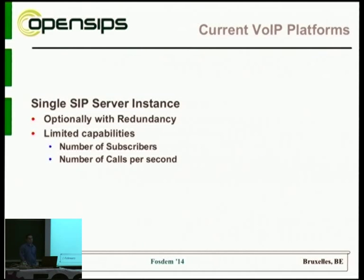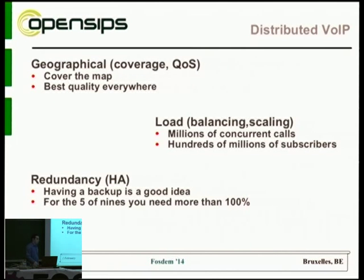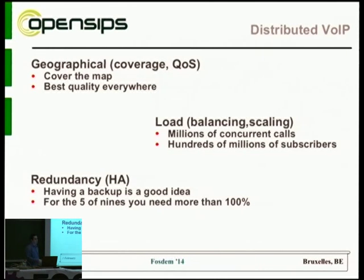Even if you're running high performance software like OpenSIPS, there are still some reasons why you wouldn't want to put everything on a single box. First, there are geographical reasons — your users are spread across the globe, not everybody is from the same country. You want to cover the entire map to provide better voice quality to everybody, so you don't stream media from Europe to Asia or the United States.